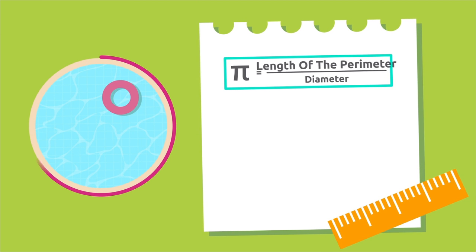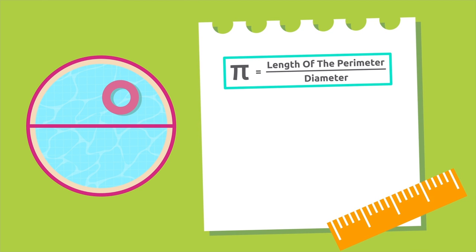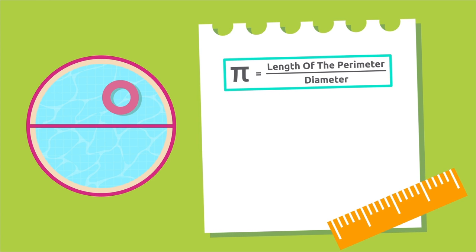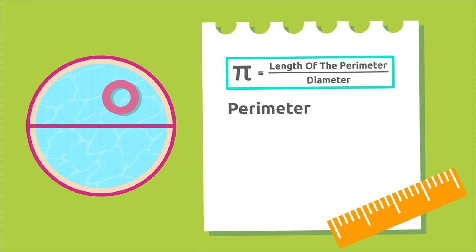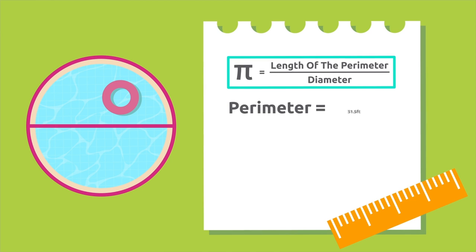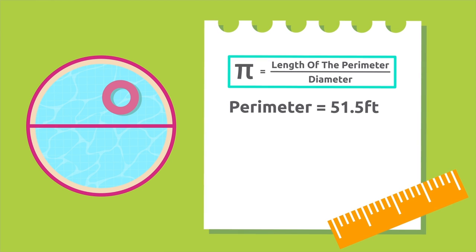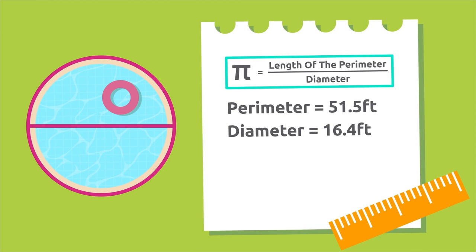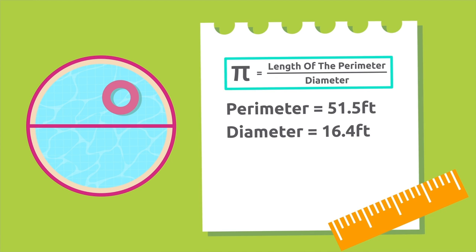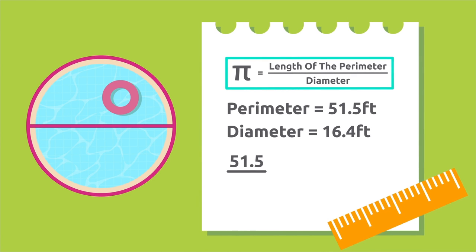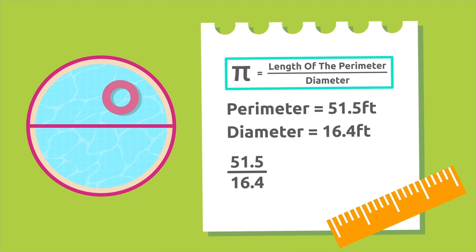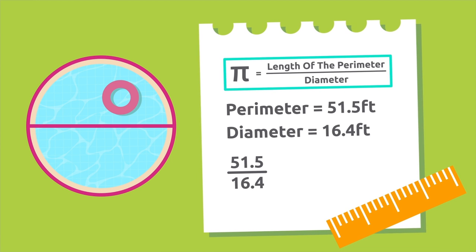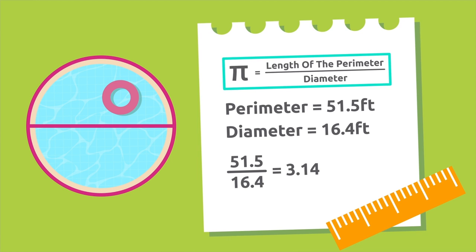Now measure the perimeter of this swimming pool, divide the length by its diameter, and you'll also get 3.14. The perimeter of this circular swimming pool is 51.5 feet and its diameter is 16.4 feet. If we divide 51.5 by 16.4 we get 3.14.